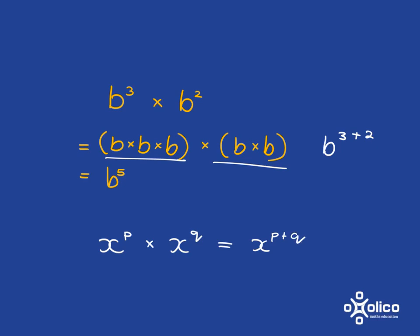And again, easy to picture. This is p x's all multiplied together. This is q x's all multiplied together. So in total, we've got p plus q x's multiplied together.